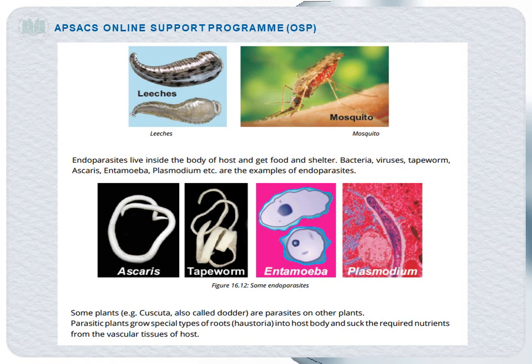Plants can also be parasites on other plants. These plants grow special types of roots into the host body and suck the required nutrients from the vascular tissues of the host.